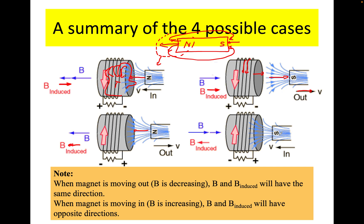Conversely, if the south pole is entering the coil, the field line goes to the right and it's getting stronger because it's getting closer. Which means the induced B will be in the opposite direction — my thumb is pointing to the left, and my fingers are going up and around like that.